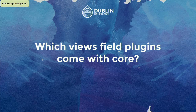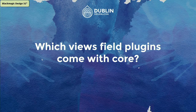Which Views field plugins come with core? All entity fields are rendered by one plugin — the entity field plugin. Other than that, all basic data types — integer, boolean, text, whatever you name it in SQL — the basic field renderers are there in Views and ready to use. All you have to do is map your data accordingly and you are ready to use them in the Views UI.